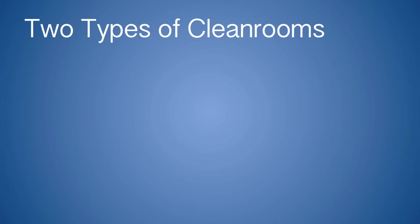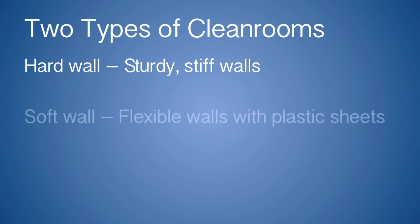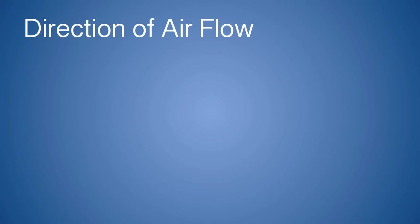There are two different types of clean rooms. Hard wall clean rooms have sturdily constructed, rigid walls. Soft wall clean rooms have flexible walls, such as plastic sheets or strips. Hard wall clean rooms are typically cleaner than soft wall, but the processes to avoid contamination are similar in both. Clean rooms can also be classified by the direction of the airflow.